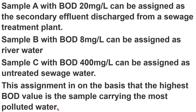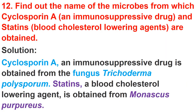The next question: find out the name of microbes from which Cyclosporin A (an immunosuppressant drug) and statins (a blood cholesterol-lowering agent) are obtained. Cyclosporin A is obtained from the fungus Trichoderma polysporum, and statins are obtained from Monascus purpureus.